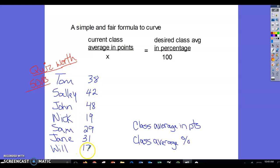If we add up these total points we get 224 points. So 224 points divided by 1, 2, 3, 4, 5, 6, 7 students gives me a class average in points of 32.